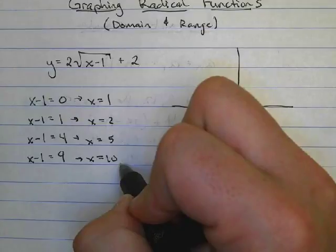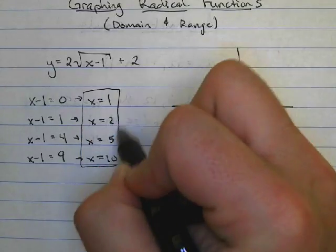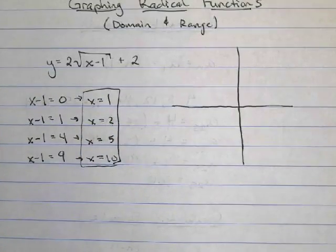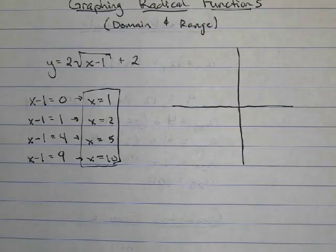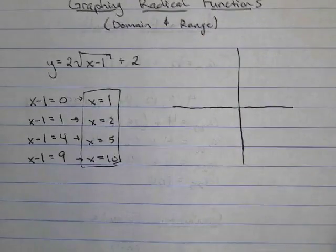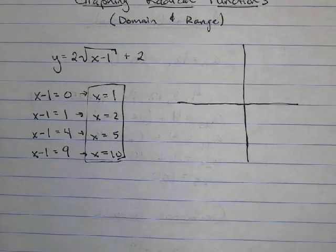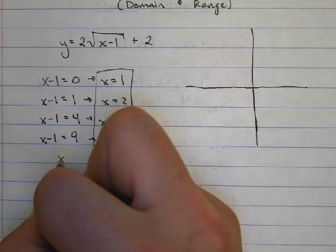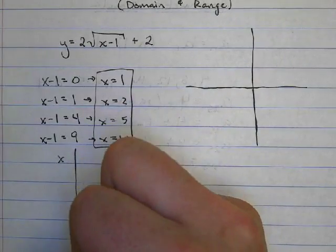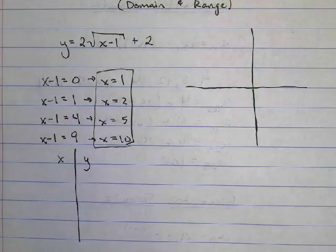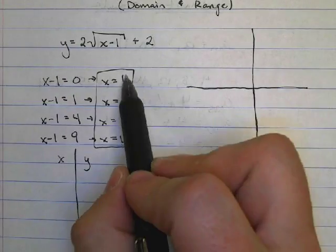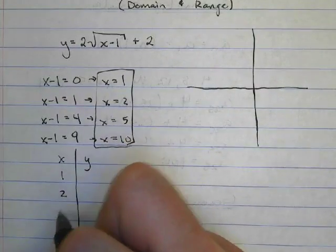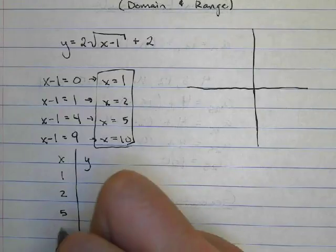So these are the four values I'm going to plug into my t-chart to help me find the four points that will let me graph this. Now it's time to build our t-chart. I have my x and my y columns, and here are my four x values: 1, 2, 5, and 10.